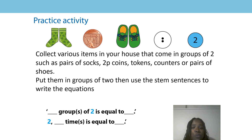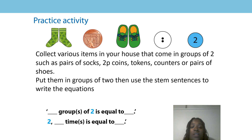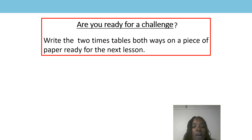Well done and thank you for joining me. I have an activity for you to do before next time. I would like you to collect various items in your house that come in groups of 2 — this could be pairs of socks, 2p coins, tokens, counters, or pairs of shoes. Put them in groups of 2 and then use the stem sentences to write the equations. I also have a challenge: I would like you to write the two times table both ways on a piece of paper, ready for the next lesson. Thank you again. See you next time. Bye!